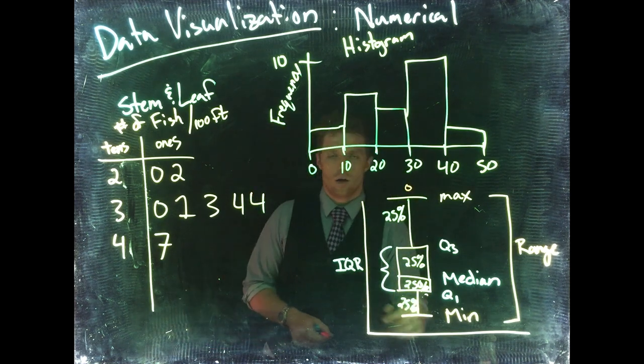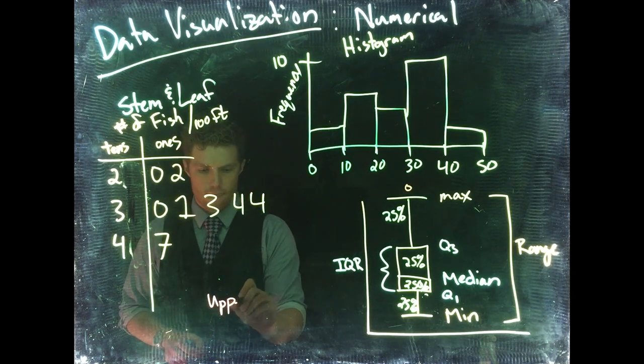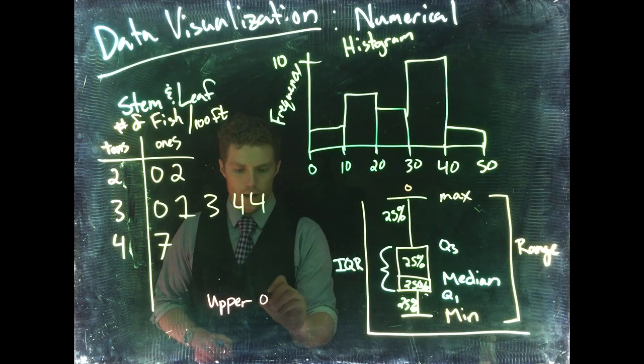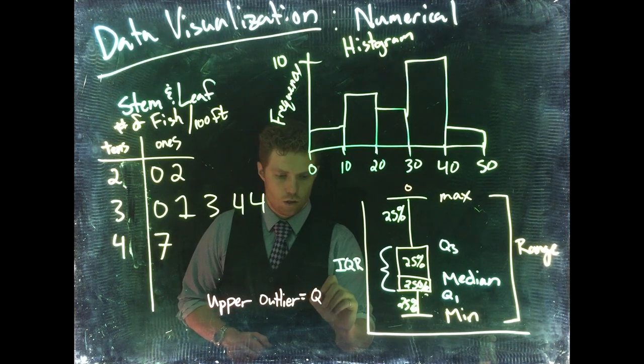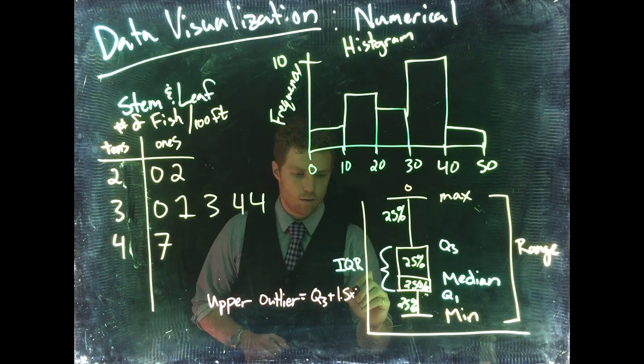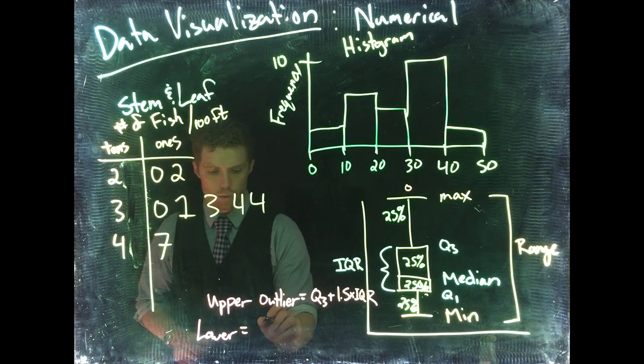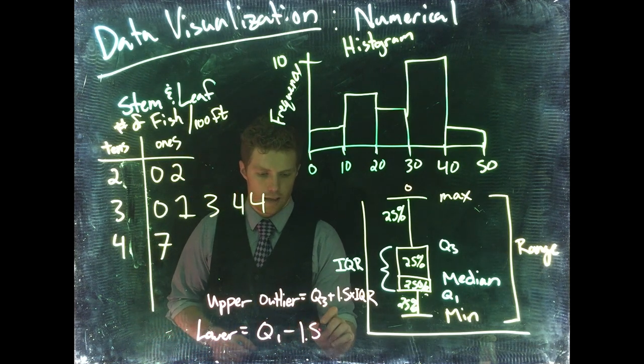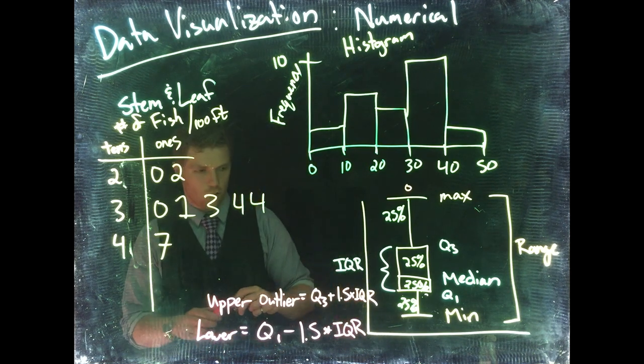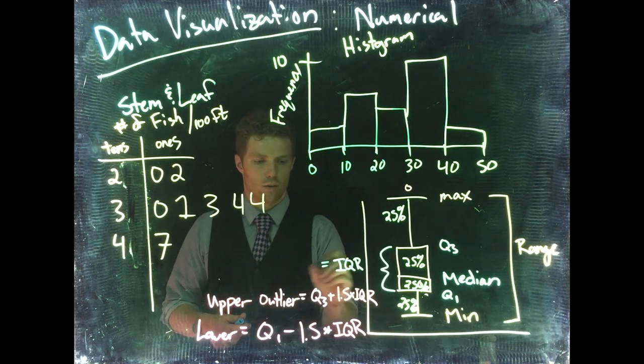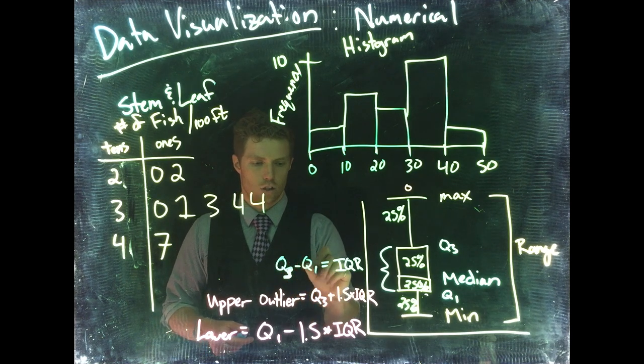If we want an upper outlier, the upper outlier equals Q3 plus 1.5 times IQR, and the lower outlier equals Q1 minus 1.5 times IQR. Just to be really specific, the IQR is equivalent to Q3 minus Q1—that gives us what the IQR is.